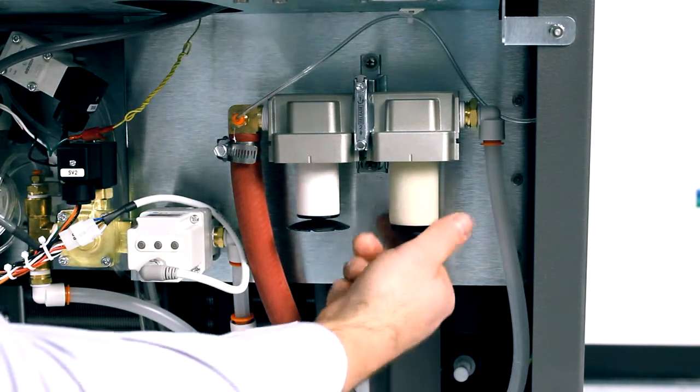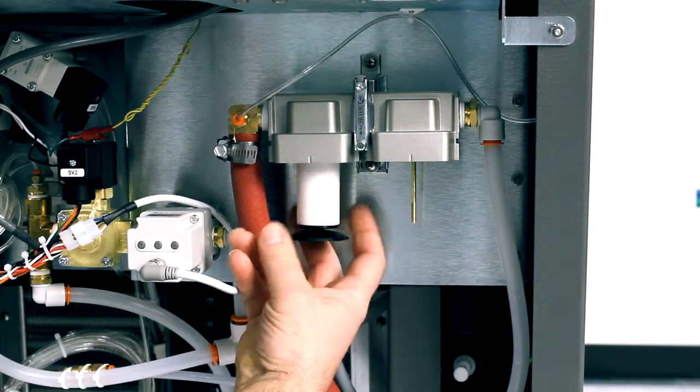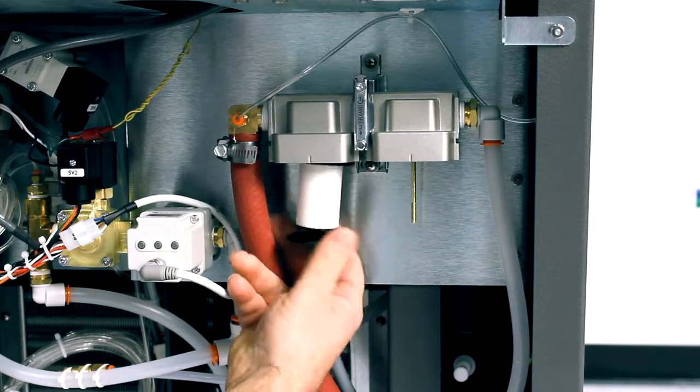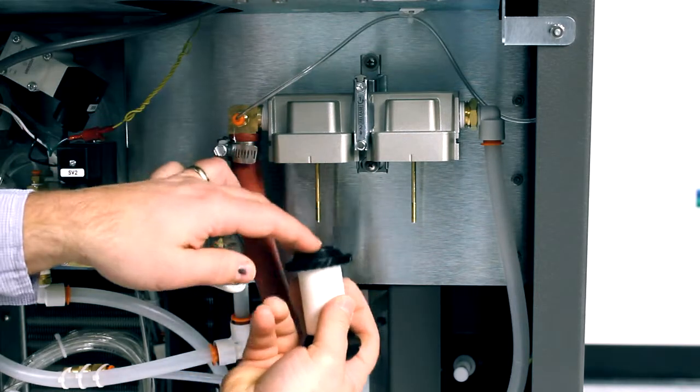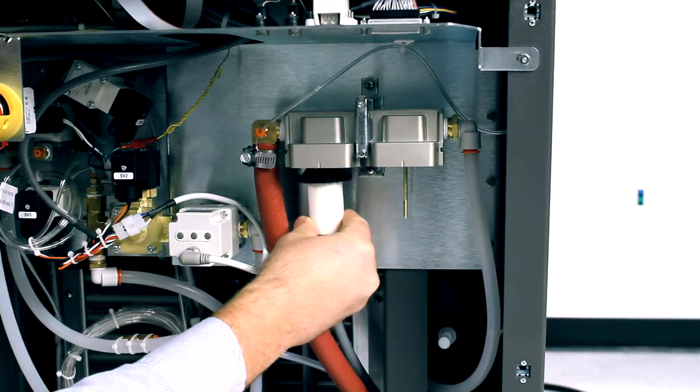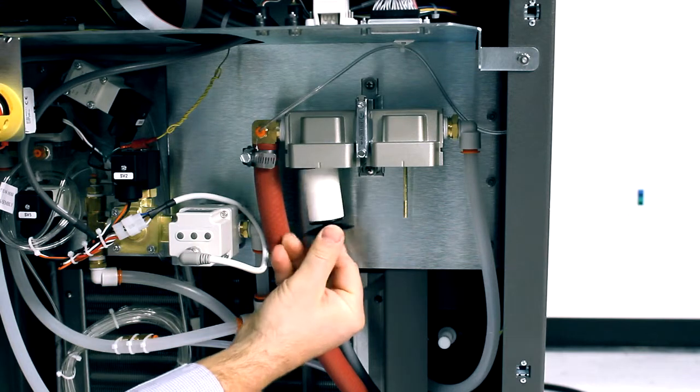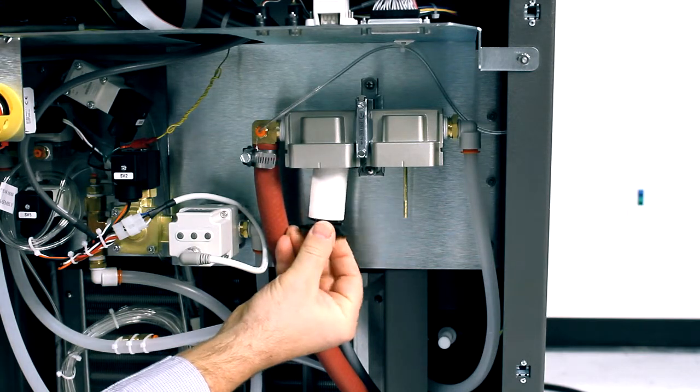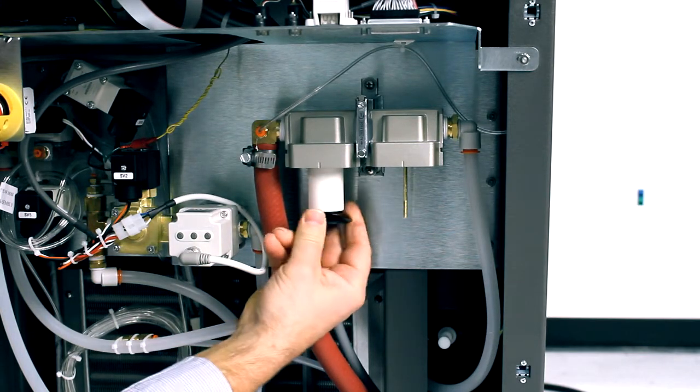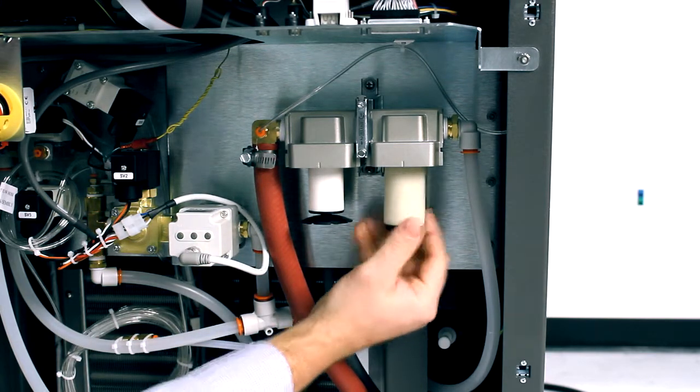Unscrew and remove each filter element. Install the new filter elements. Take note that the particulate filter element and the coalescing filter element are different filter elements with different part numbers.